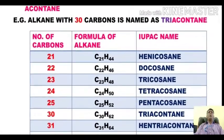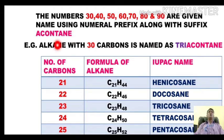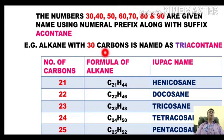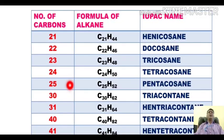Another important point: the round numbers 30, 40, 50, 60, 70, 80, 90 are named using numeral prefixes along with the suffix '-acontane'. For example, the alkane with thirty carbons is called triacontane — 'tri-' for three and '-acontane' for the round thirty. Likewise, the alkane with forty carbons is called tetracontane.